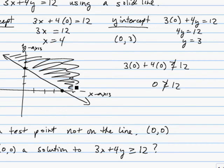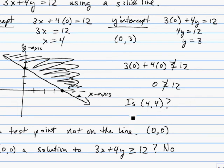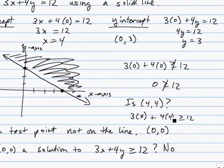So we'll shade the other side. Just to verify, let's pick a point out there — the ordered pair (4, 4). As we test that out, we do 3 times 4 plus 4 times 4. Is that greater than or equal to 12? We can see that is true, because 16 already is greater than or equal to 12. So every point on that side is a solution.